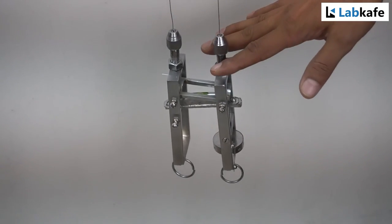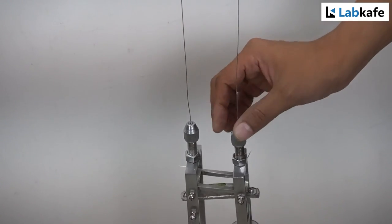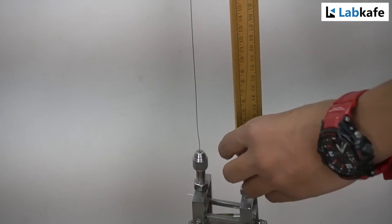First, I have hung the Searle's apparatus with two steel wires with the help of these torsion screws. This is our experimental wire and this is our reference wire. The length of each of the wires is one meter. We measure the length using a meter scale.